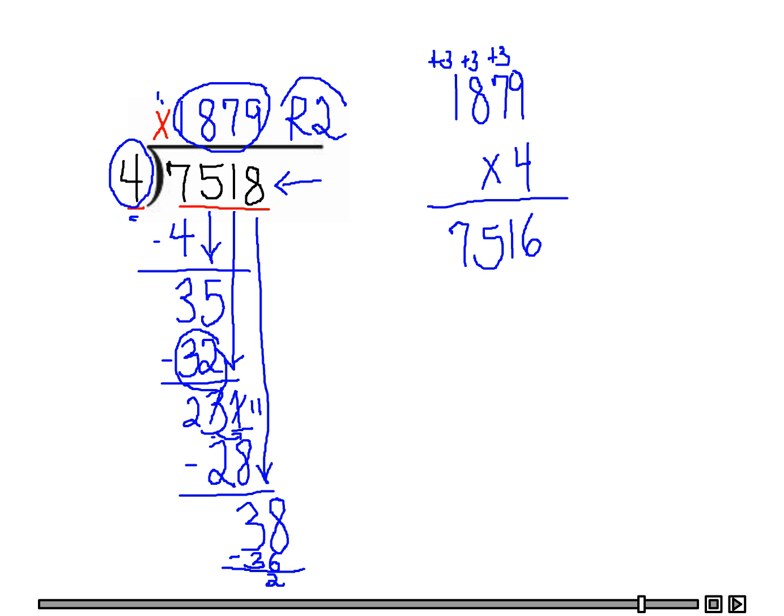Not quite there. But I need to add my remainder to this, which is two. Plus two. So this will equal 7,518. Let me write that better. Five hundred and eighteen. And this proves that this is correct because it equals my dividend. So this is my answer. 1,879 with a remainder of two.